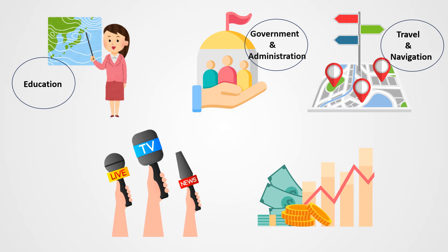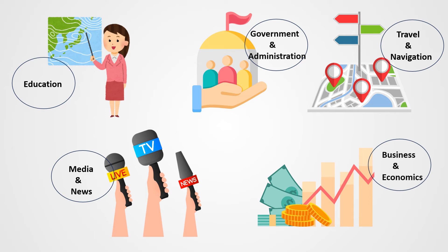Third is travel and navigation — travelers use political maps to understand the political landscape of the areas they are visiting, including international borders and major urban centers. Fourth is media and news — political maps are frequently used in media to provide geographical context to news stories, especially those related to international affairs, conflicts, or elections. Fifth is business and economics — businesses use political maps to understand market regions, plan logistics, and make decisions about where to operate or invest.